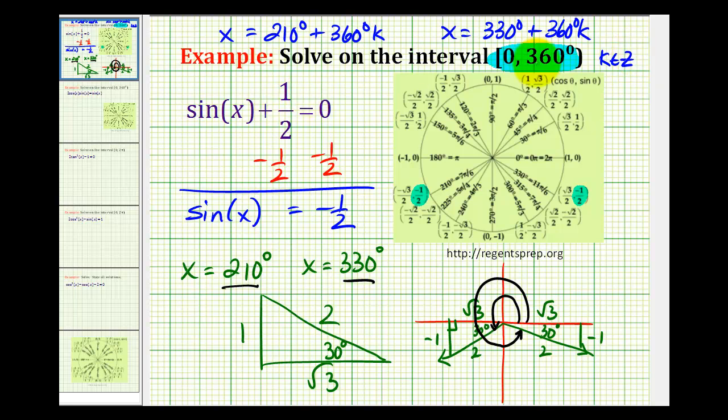So even though this question didn't specify all solutions, sometimes you will be asked to determine all of them and you can write them in this way. Now I may have gone a little bit overboard on determining where sine x is equal to negative 1/2, but I think it's important that you recognize the different ways of determining which angles have specific sine function values.